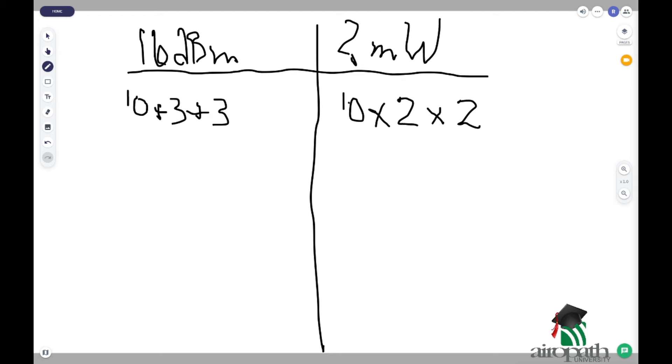Now, our mathematical equation now is 10 times 2 times 2, which equals 40 milliwatts. So, 40 milliwatts equals 16 dBm and vice versa.